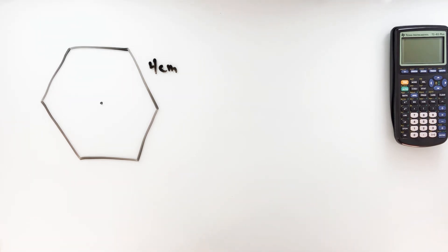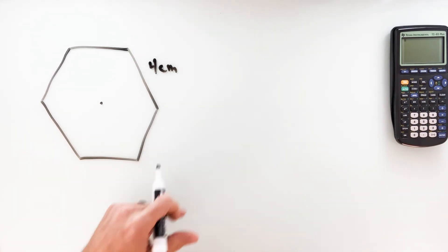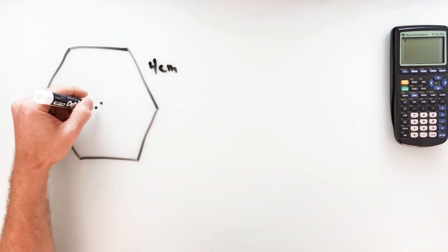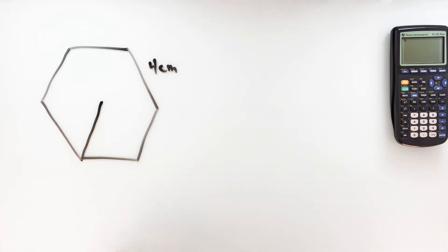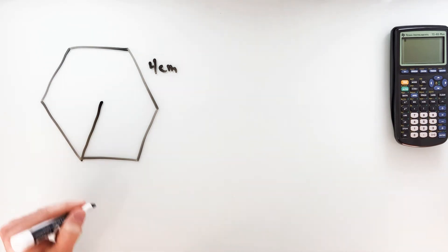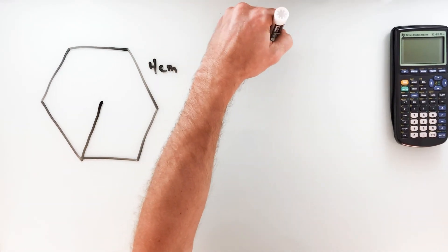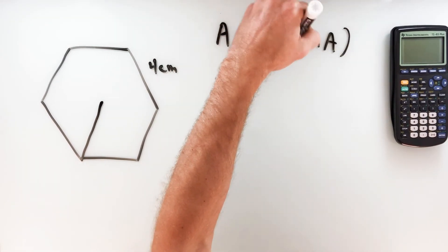We'll say that one side is 4 centimeters. If I wanted to use one half AP, it would be pretty quick to find the perimeter since all sides are four. I could draw the apothem straight down and utilize 30-60-90 triangles with the hexagon. But I'm going to use the triangle formula: one half BC·sin(A).